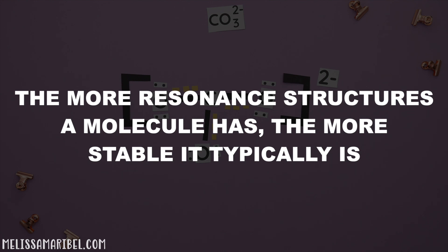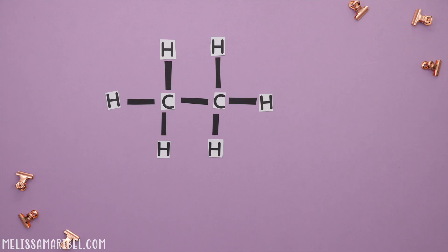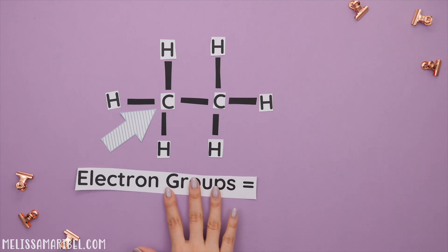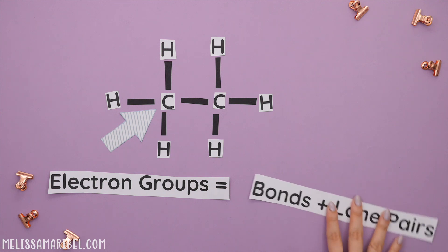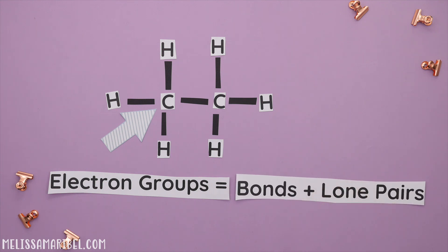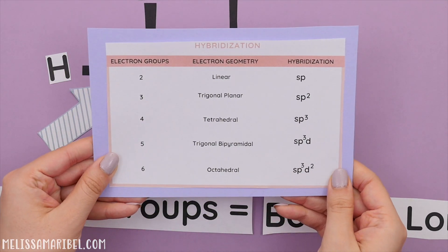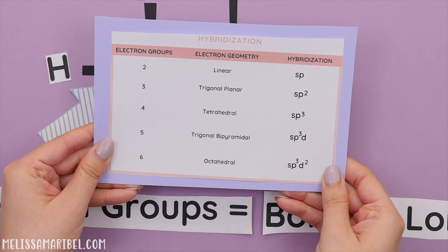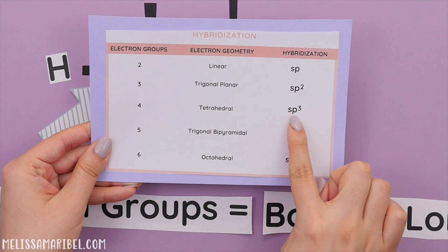Now for hybridization. Let's find the hybridization of each central atom for this structure. Looking at this first carbon, we will identify the electron geometry. To find the electron geometry, we must find the electron groups of this carbon. Electron groups are bonds plus lone pairs. We have one, two, three, four bonds and no lone pairs. So we have four electron groups using our table. This is tetrahedral. And tetrahedral has a hybridization of sp3. So each carbon has a hybridization of sp3.